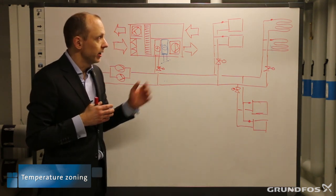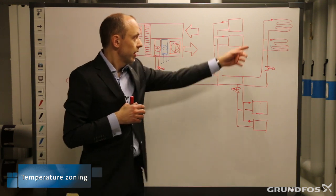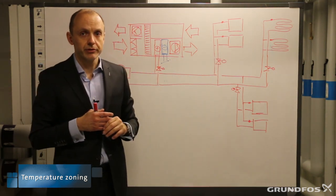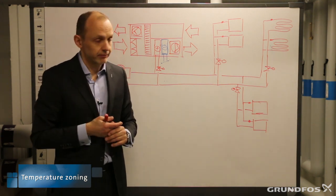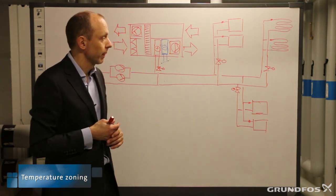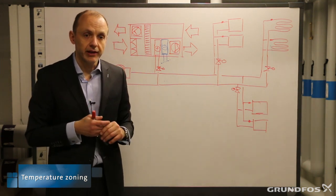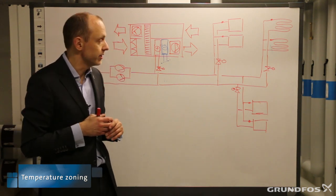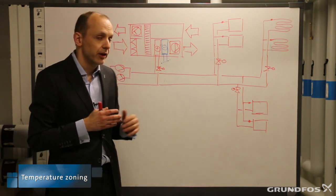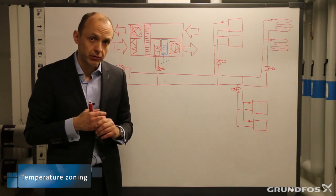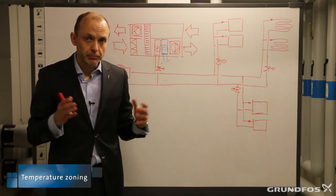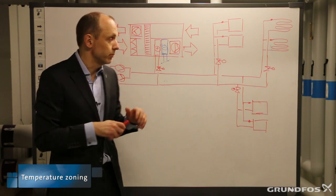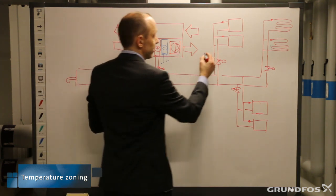Normally radiators, floor heating, and air handlers need different temperatures. So how do we do that? A very simple and well-known way to achieve this is to introduce the mixing loop, and with the mixing loop you can actually adapt the flow temperatures.